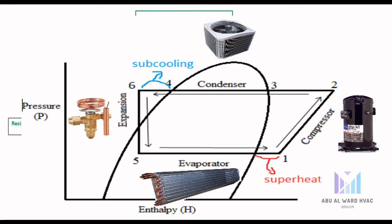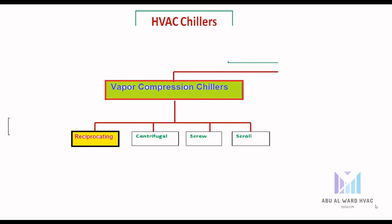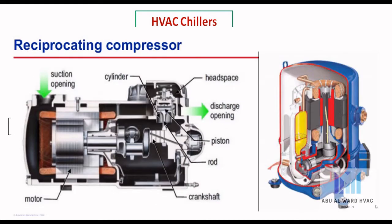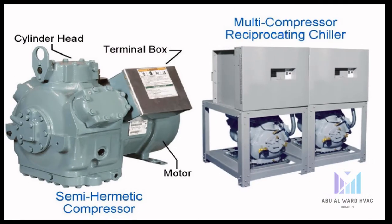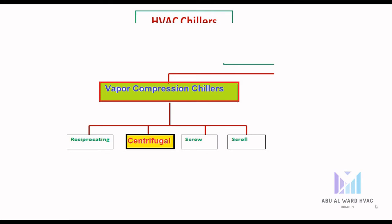The vapor compression circuit includes the following components: compressor, condenser, expansion valve, and evaporator. For vapor compression chillers, the reciprocating type: reciprocating compressors, like a reciprocating engine, have pistons, rods, and discharge and intake valves. Compression is achieved by trapping a fixed amount of refrigerant gas in a chamber, making them positive displacement type compressors.